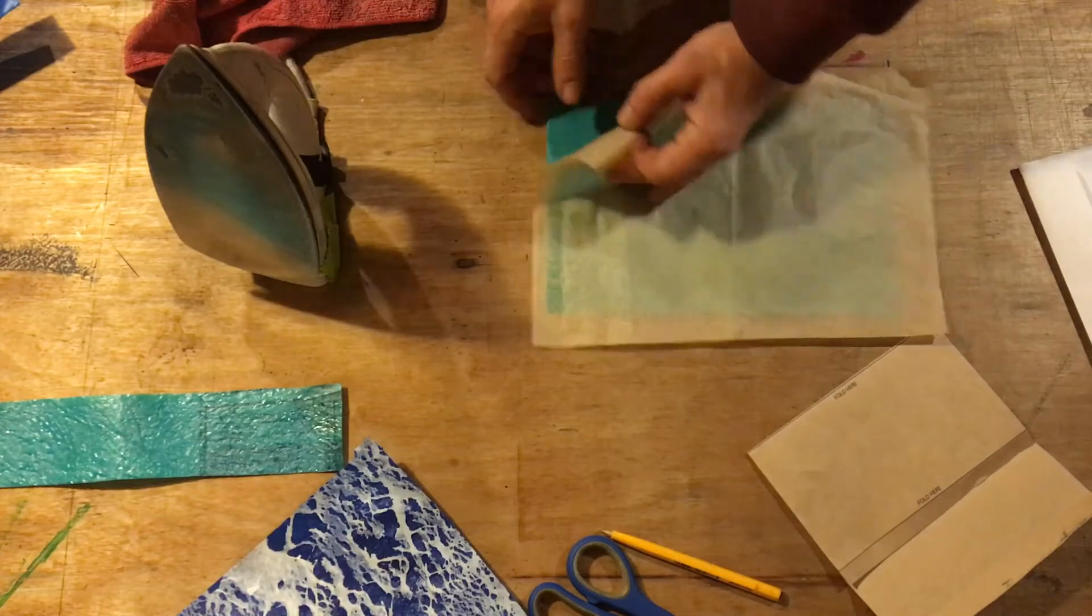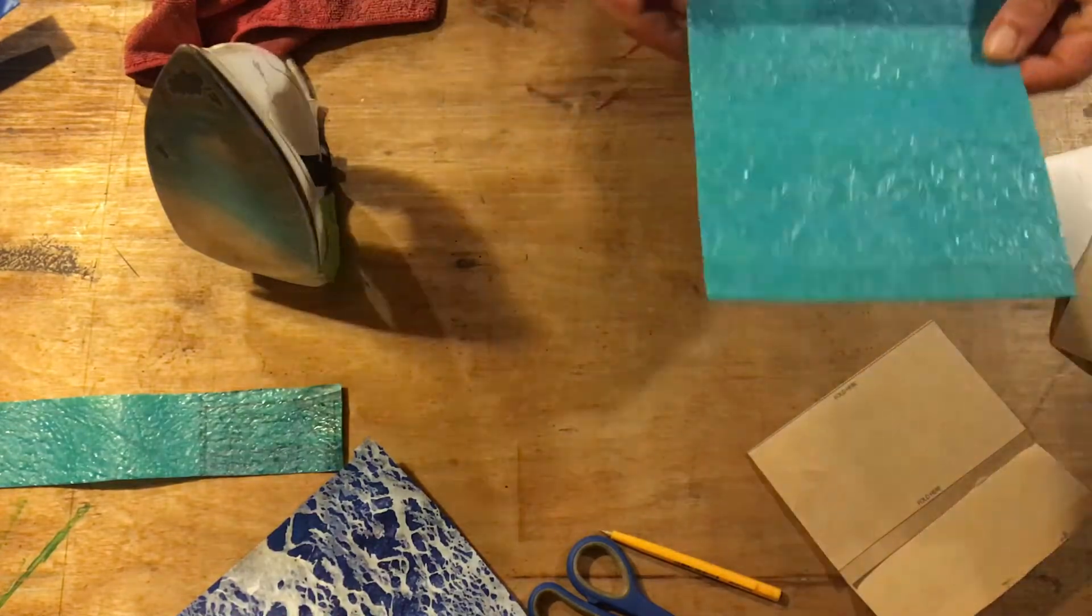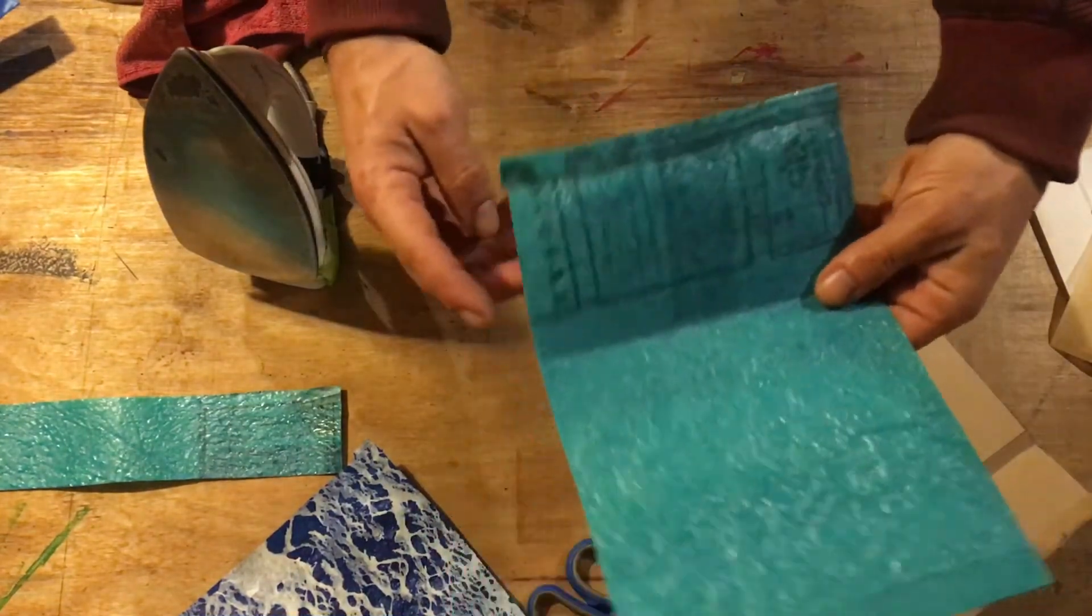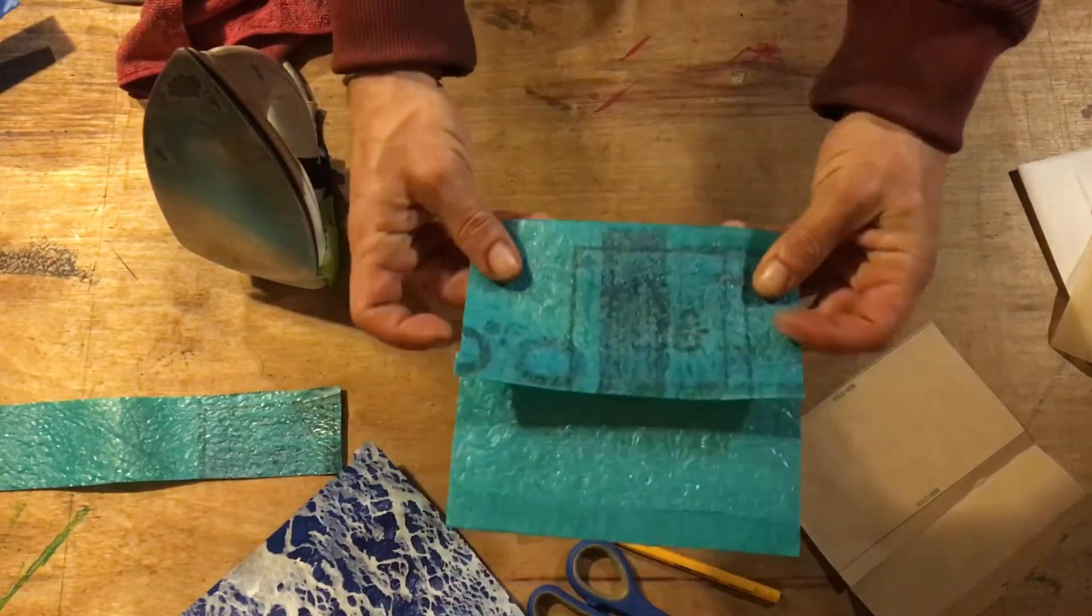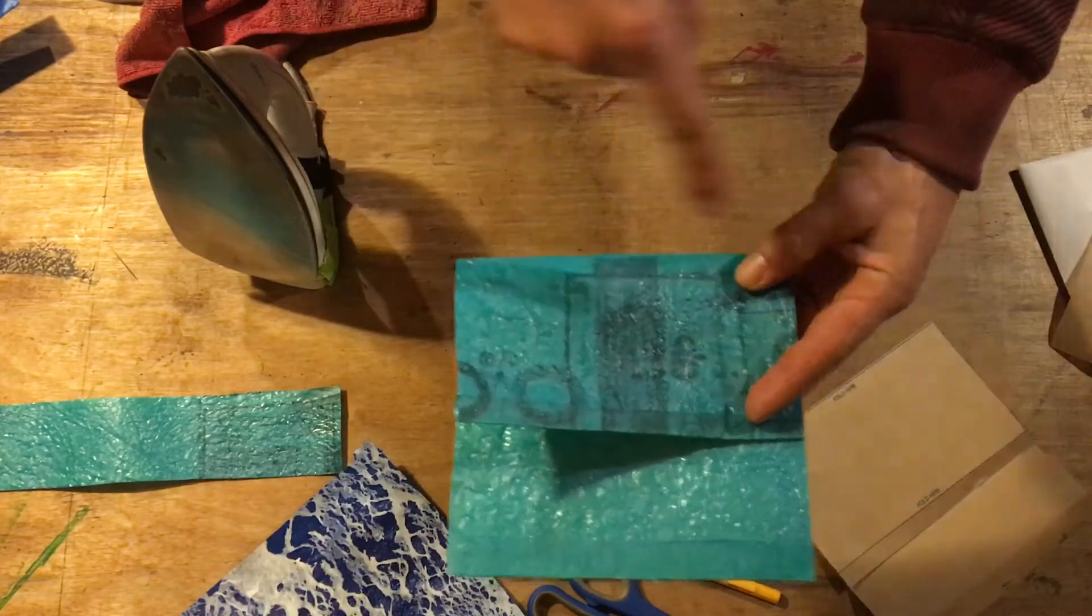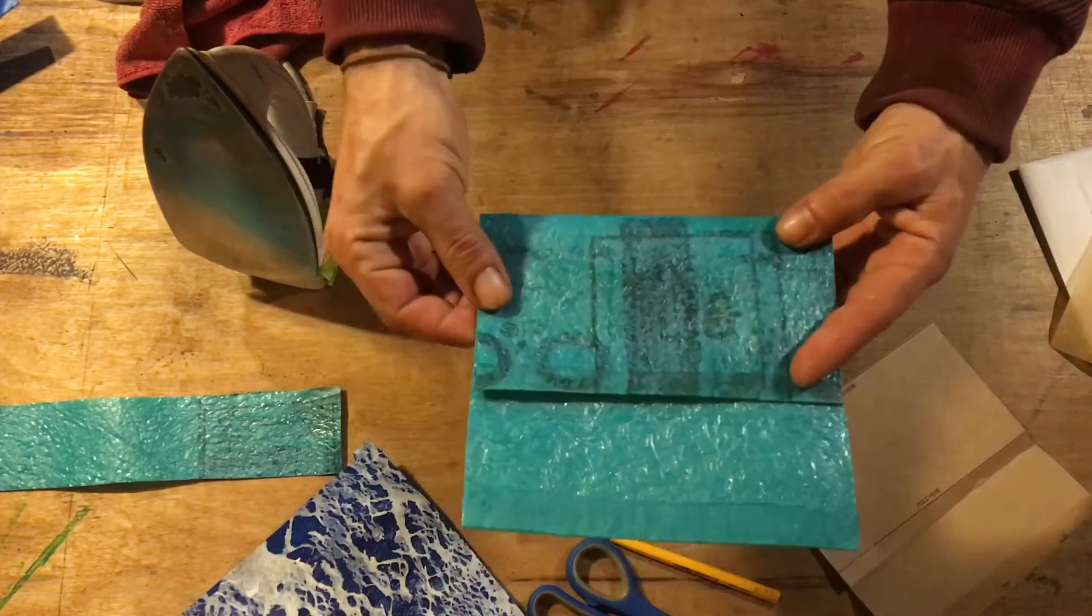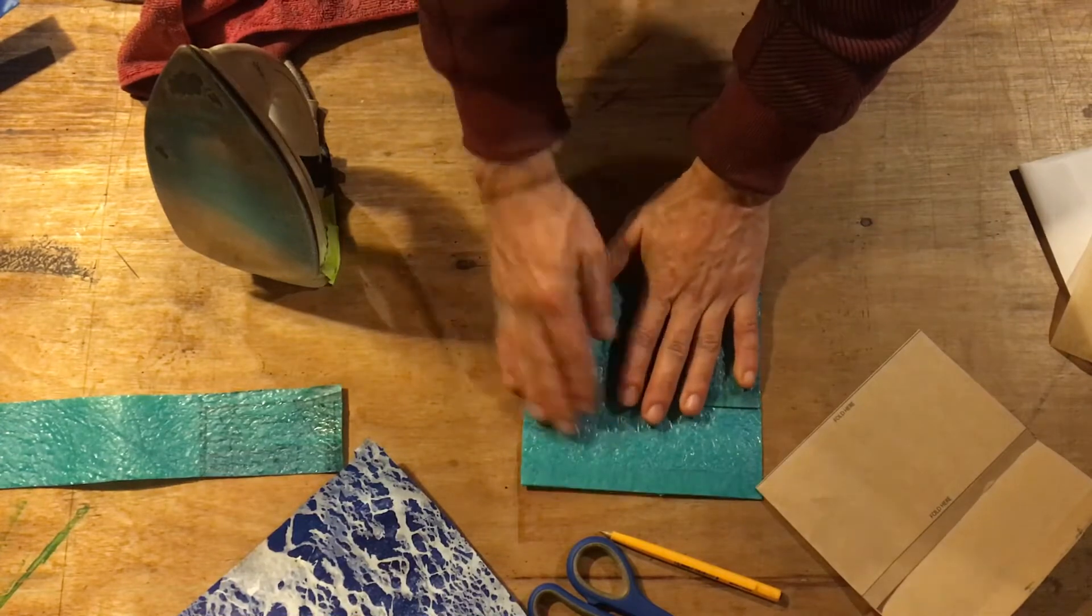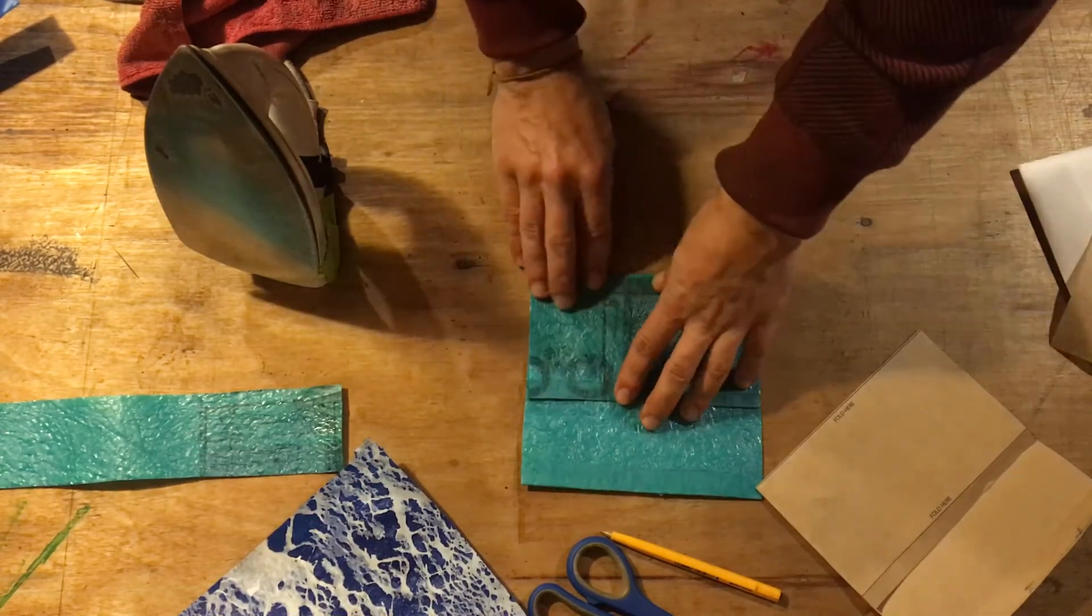What is left now is we got our top edge fused, our bottom edge fused, and what is left is to basically close the pouch and seal two edges on the side. Again, you're going to press your pouch, make sure it's all lined up with the markings and the foldings that you've done.